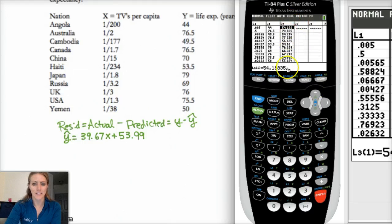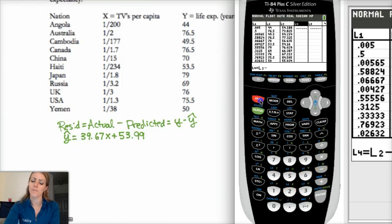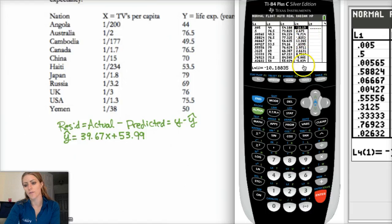Hit enter. Okay, so those are all your predicted Y values. These are your actual Y values in L2. So we need to do actual minus predicted. So then in list four, I'm going to highlight list four. I need to do actual minus predicted. So L2 minus L3. Hit enter. And then I have a list of all my residuals for each of those X values that I found.